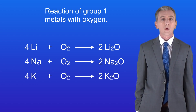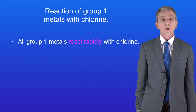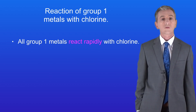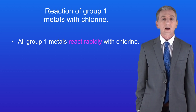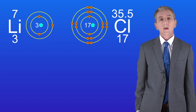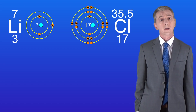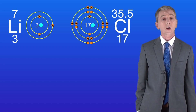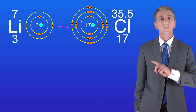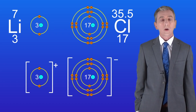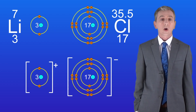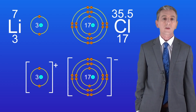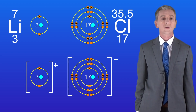Group 1 metals also react rapidly with chlorine, which is in Group 7. This shows a lithium atom and an atom of chlorine. When these react, the outer electron from the lithium atom moves on to the chlorine atom, producing the one positive lithium ion and the one negative chloride ion. Both of these ions now have a full outer energy level and we've made the compound lithium chloride.